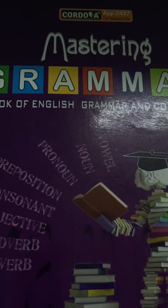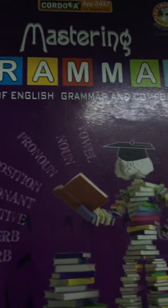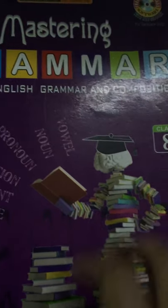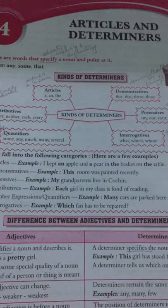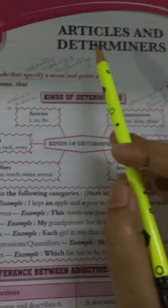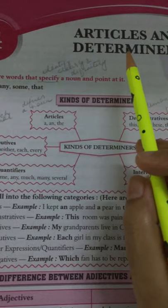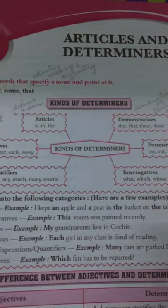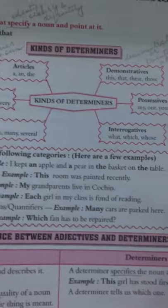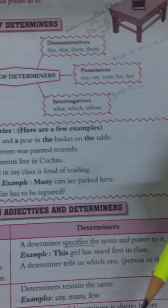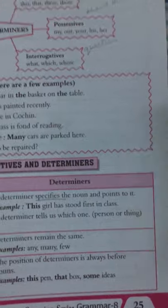Good morning children and welcome to the online session of English grammar for class 8. Today we will start a new chapter which is Articles and Determiners — chapter number 4, on page number 25.